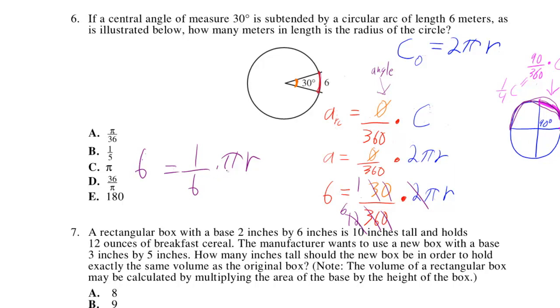Alright, now I'm going to multiply both sides by 6. So that way that 6 and that 6 cancel. So I've got to make sure I multiply this side by 6. And I get 36 is equal to pi r. And now I have to divide both sides by pi. And that will just give me r is equal to 36 over pi.